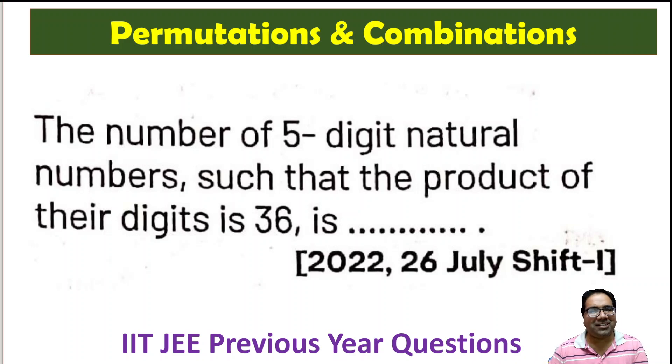The number of 5-digit natural numbers such that the product of digits is 36. We have 5 digits and the product of those 5 digits should be equal to 36.